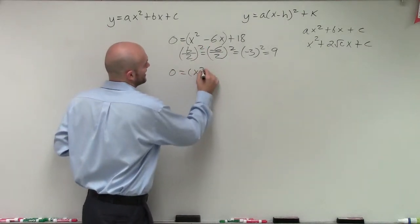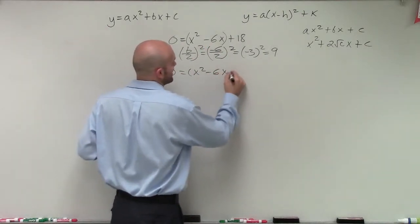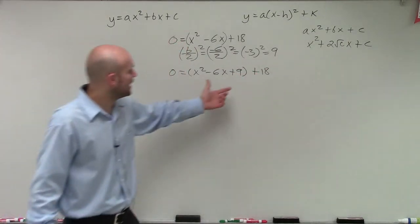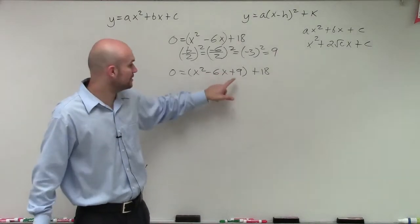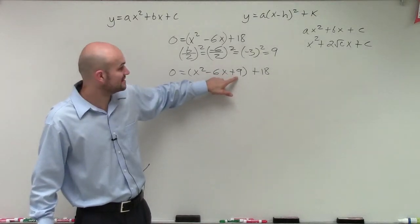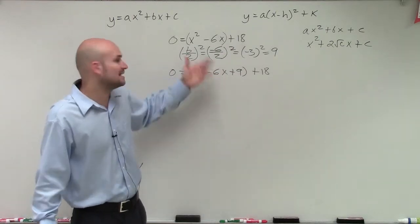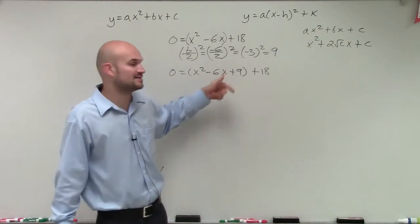0 equals x squared minus 6x plus 9 plus 18. So what you can see now is now I have a perfect square trinomial where my c is a square number and then my b is 2 times the square root of c. And it has to be negative, but that's OK. It can be positive or negative.